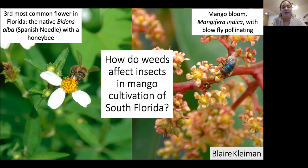I installed my experiment at a mango farm in the agricultural area of Homestead. There are two treatments applied to 30 trees each — 60 total — using a randomized block design: weeds or no weeds.